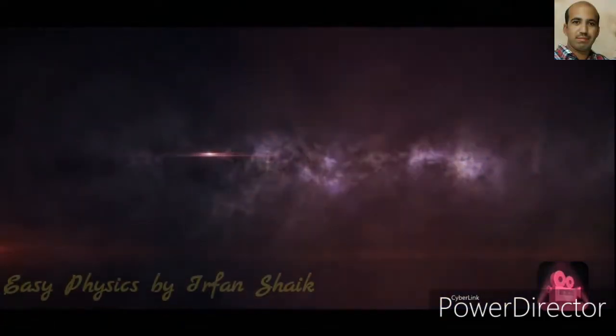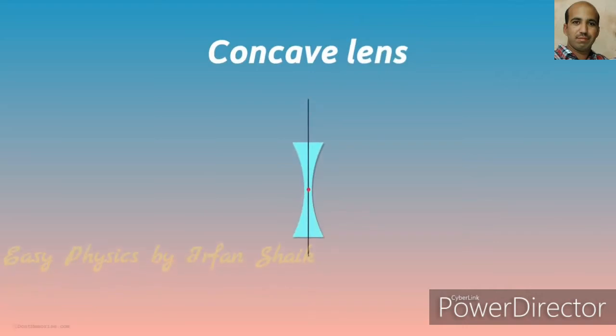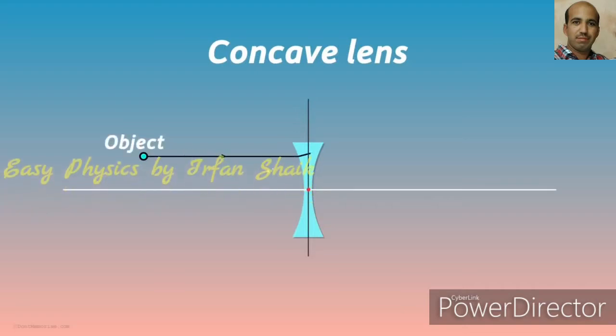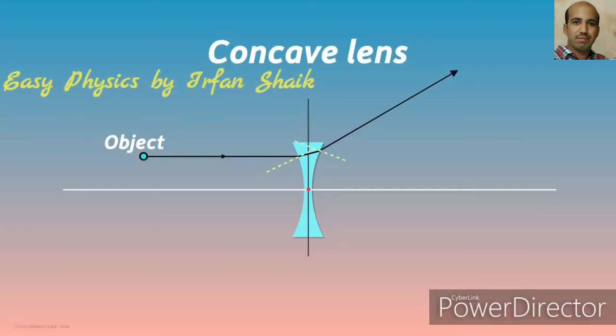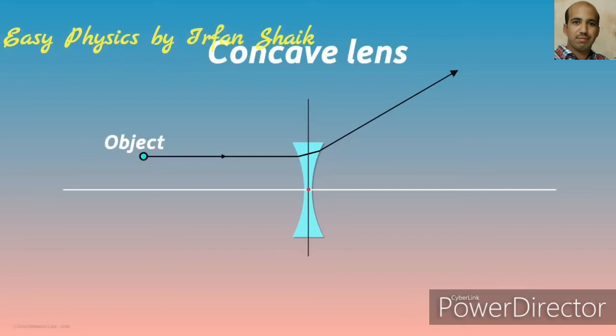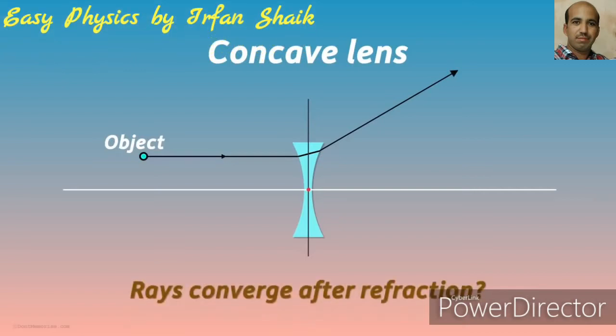Concave Lens. Let's try to know about it. When a light ray passes through a concave lens, at first it bends towards the normal line and then bends away from the normal.